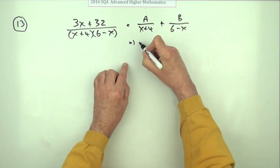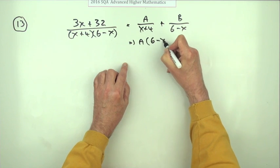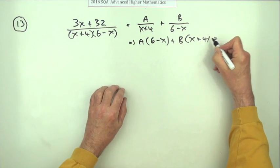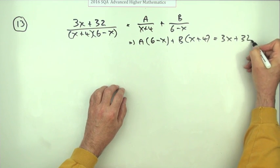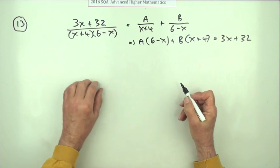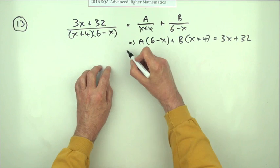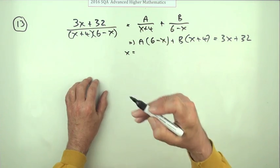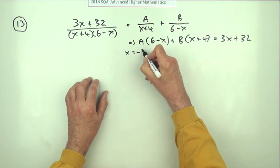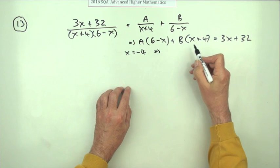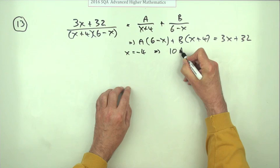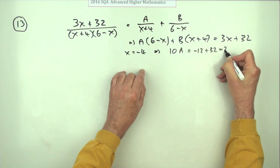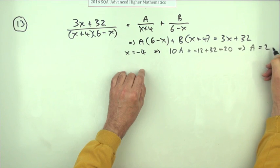So that means multiplying throughout we've got A times the 6 minus x plus B times the x plus 4 would equal 3x plus 32. And the best thing to do here would be just to put in knockout values. So we'll knock out the B first so that A gets evaluated first because it's first in the alphabet. So if x is negative 4 that means you'd end up with in this part 10 lots of A would equal and that's going to be negative 12 plus 32 which is 20. So there you go. A equals 2.